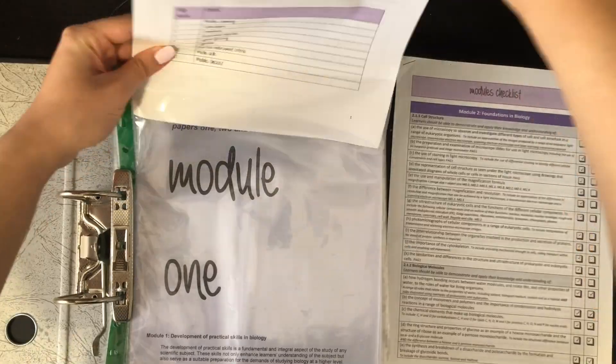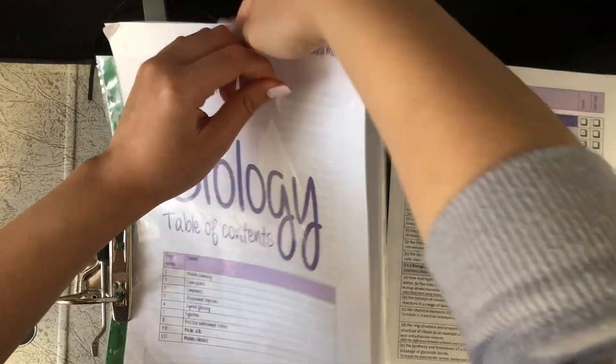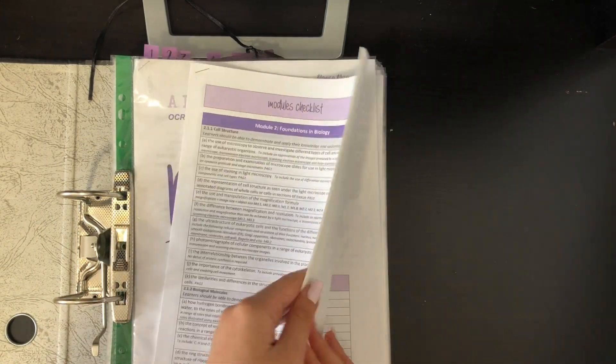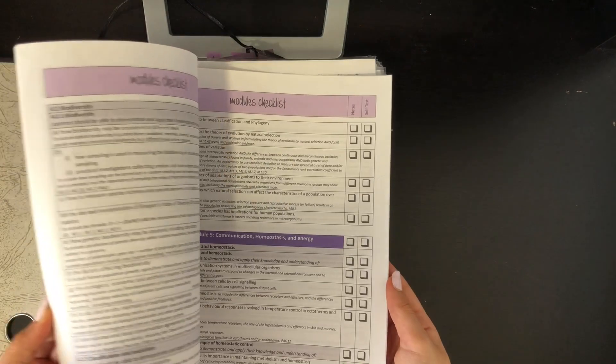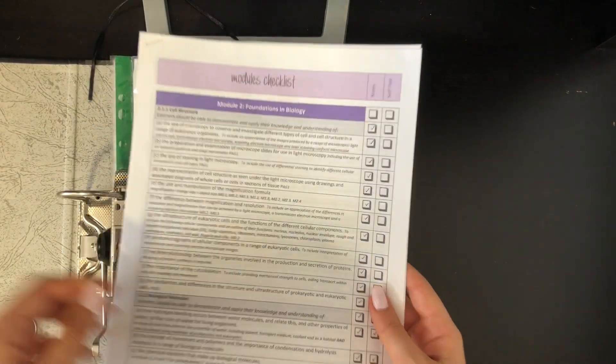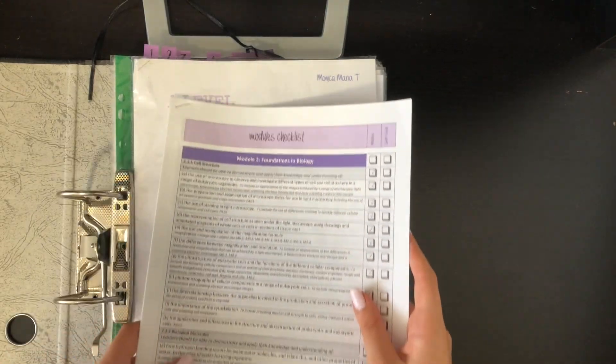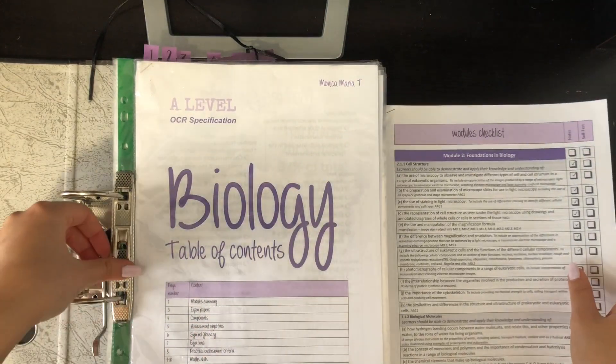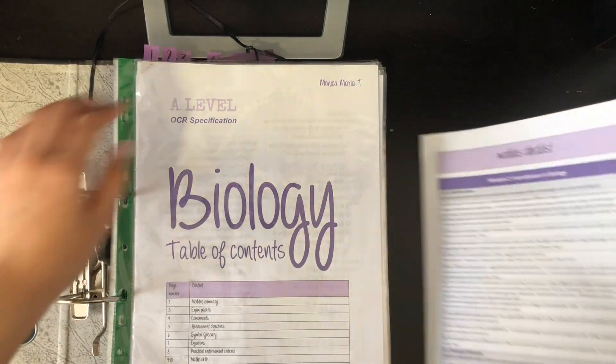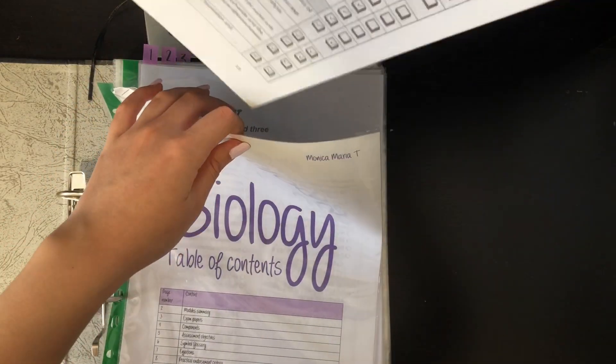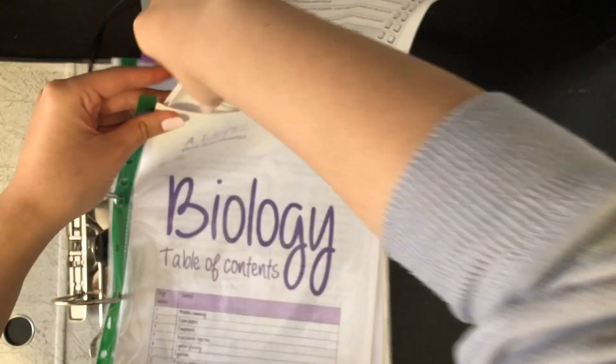And let's take out my modules checklist. So I did actually also make this myself, but you can find free ones online, and I'll link that down below. So essentially, I made little checkboxes for the notes that I'll have to take, and the self-tests that I'll need to do for each section of the specification. I went through the specification one by one, and just listed every single objective I would need to achieve by the end of course.